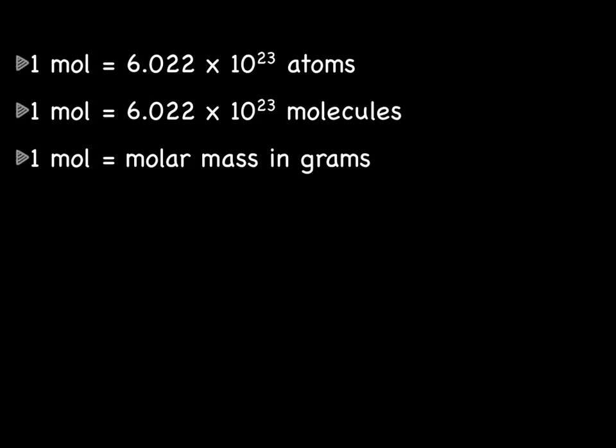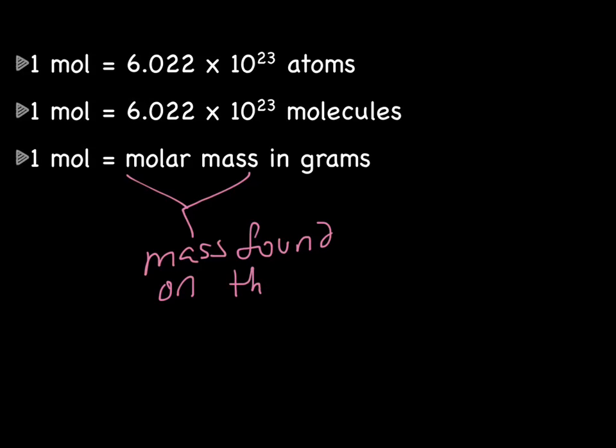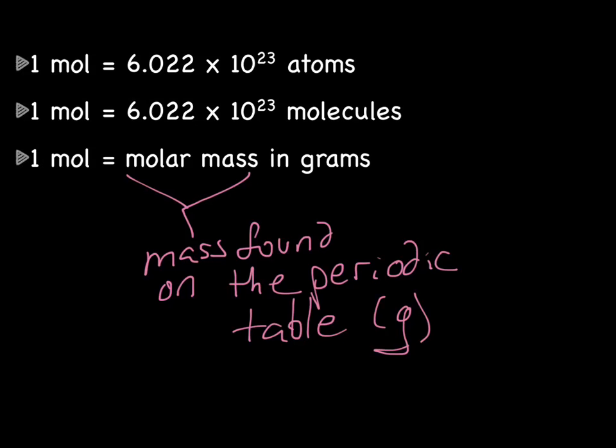Let's start with a quick review of the equalities we have used so far this unit. These should be in your notes, and they are also on your unit conversion table in the mole section. So we have 1 mole equals 6.022 times 10 to the 23rd atoms, or 1 mole equals 6.022 times 10 to the 23rd molecules, and 1 mole equals molar mass in grams. Remember, molar mass is the mass found on the periodic table, and the unit is grams.